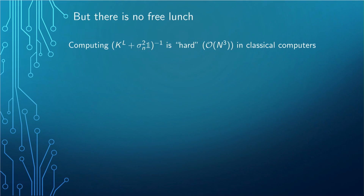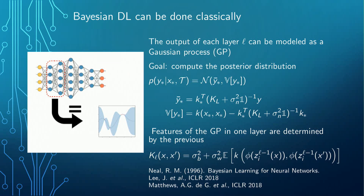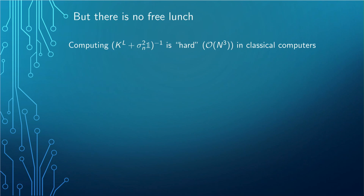So this exists — why isn't everyone using it? It turns out it's not NP-hard to compute, but we need to invert the covariance matrix, which has a power of minus one. For very large datasets, the number of operations required scales as the cube of the number of data points, and at some point this becomes intractable.